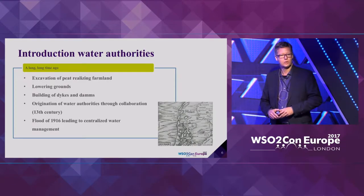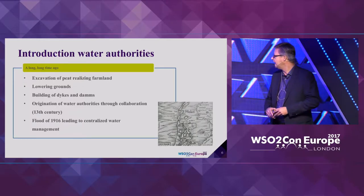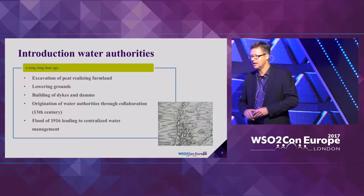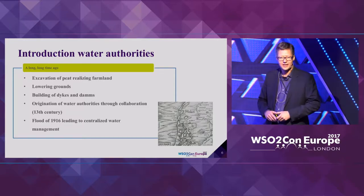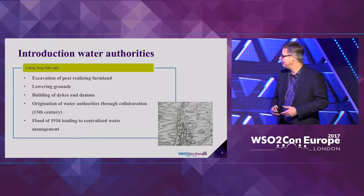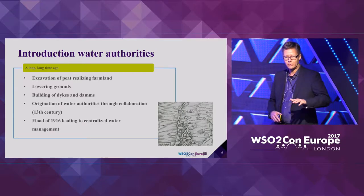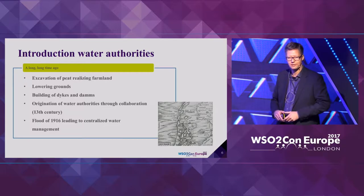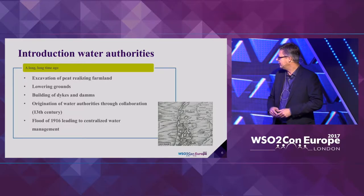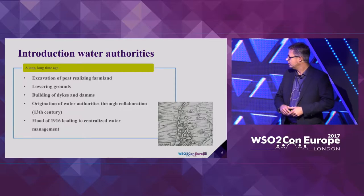Let's have a look at the water authorities first. What are water authorities? Where do they originate from? A long time ago, in the Middle Ages to be precise, the Dutch started digging ground to make it useful for growing crops. At that time, the lowlands gave rise to the need to manage the water. Our country is for a big part below sea level, so that resulted in having people work together to manage the water. That's where the water authorities originated from.